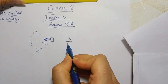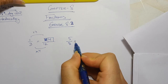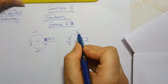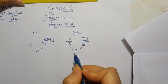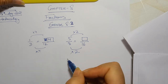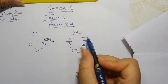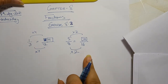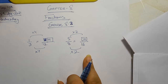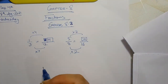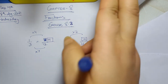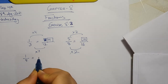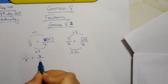In the same way: 5 upon 8 equals blank upon 16 — 16 is given. This time you multiply by 2, so numerator also multiplies by 2. And then: 1 upon 5 equals 3 upon dash — you will be able to make the equivalent fractions in this way.